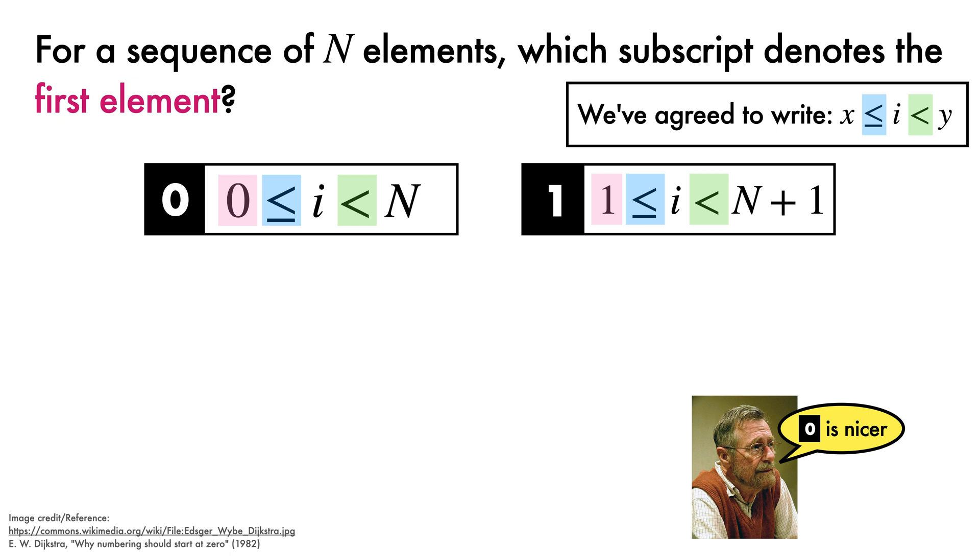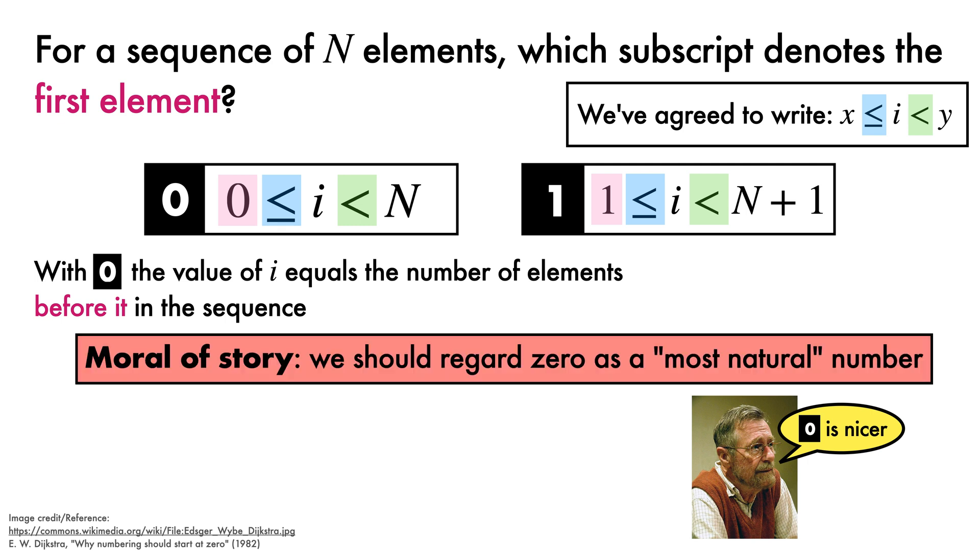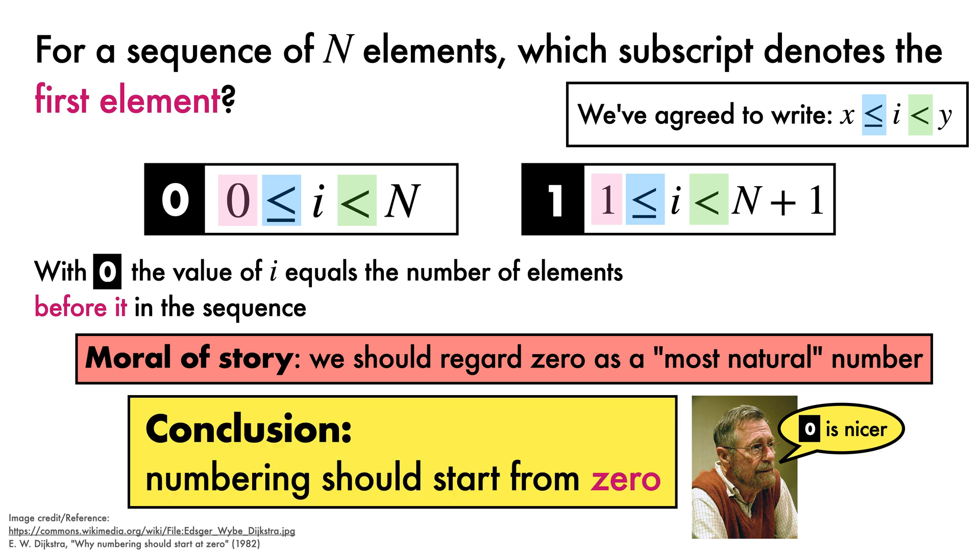This too is, of course, an entirely aesthetic judgement rather than an impregnable application of logic. Still, option 0 does have the added convenience that the value of i equals the number of elements before it in the sequence, which is somewhat intuitive. Given that the range starting from 0 is nicer, the moral of the story, says Dijkstra, is that we should consider 0 as a natural, indeed, as a most natural number. Our emphatic conclusion is, therefore, that numbering should start from 0. That's it, we've reached the end. Thank you for your attention.